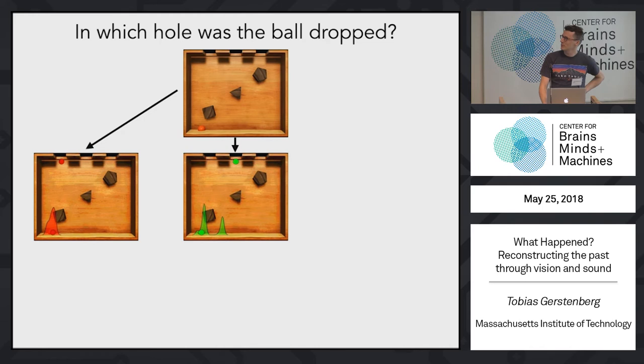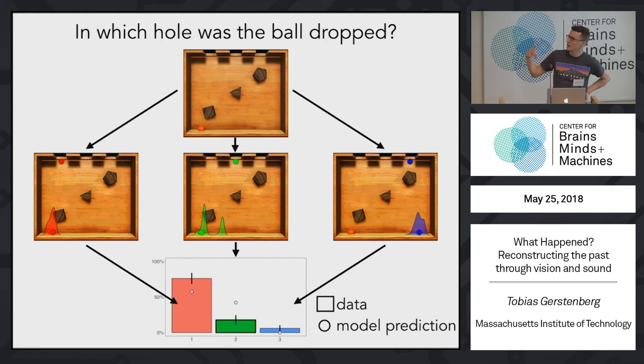If it was dropped in the middle, where would it end up? If it was dropped in the right, where would it end up? And then we can do basically inference and figure out the most likely hole that the ball was dropped in, given its final position.